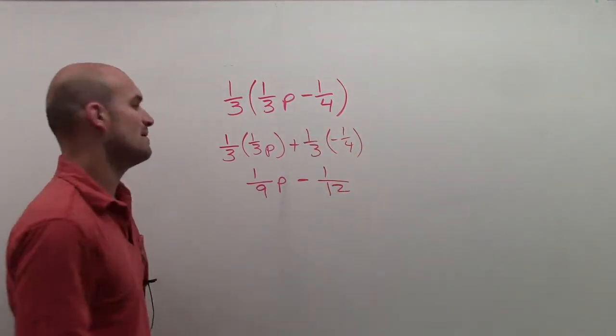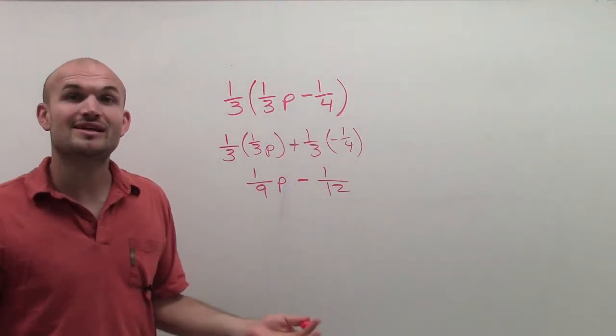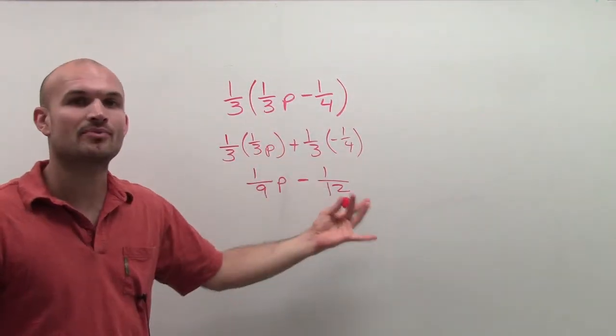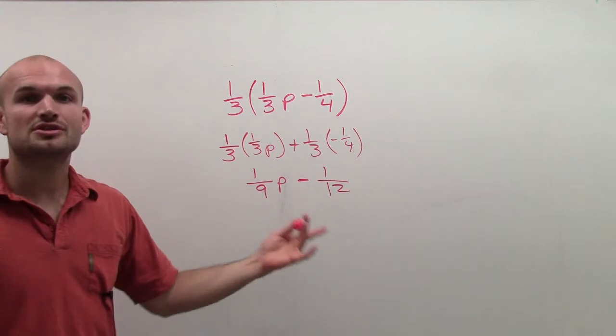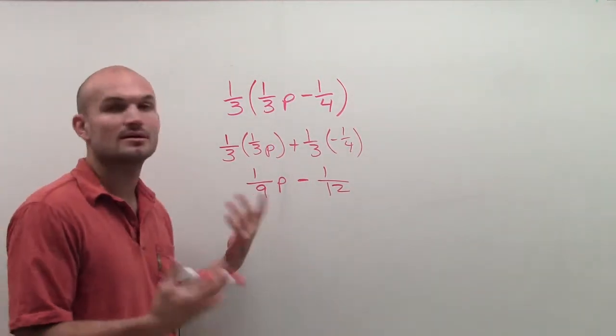So my final solution would be one-ninth p minus one-twelfth. So even though I have fractions, don't worry about them so much. Just treat it just like any other problem with your distributive property. Just make sure that you review back how to multiply fractions and you'll be fine.